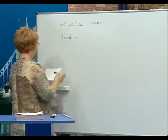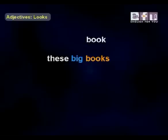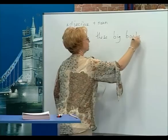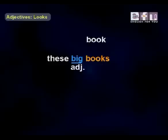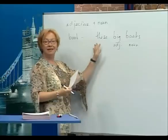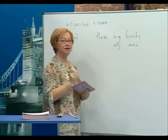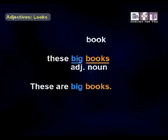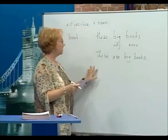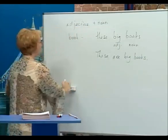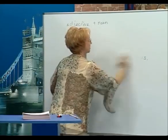'Book' — these big books. 'Big' is the adjective, 'books' is the noun. Here's a sentence: these are big books.